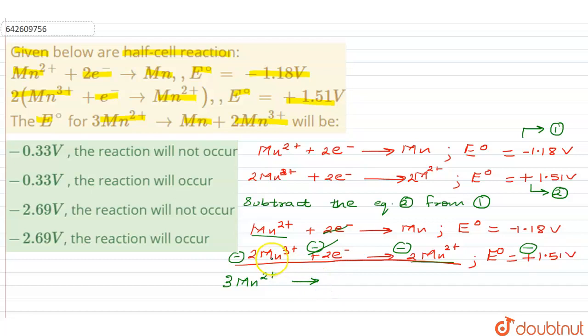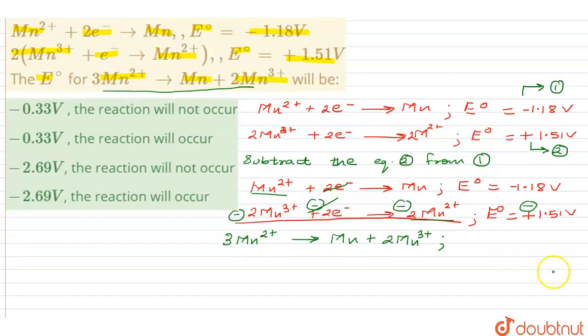Similarly, Mn³⁺, 2Mn³⁺ goes on the right hand side, it changes its sign and it becomes plus 2Mn³⁺. Now, as you can see we have already obtained our question equation over here as well as now we would be obtaining our E⁰ value also.